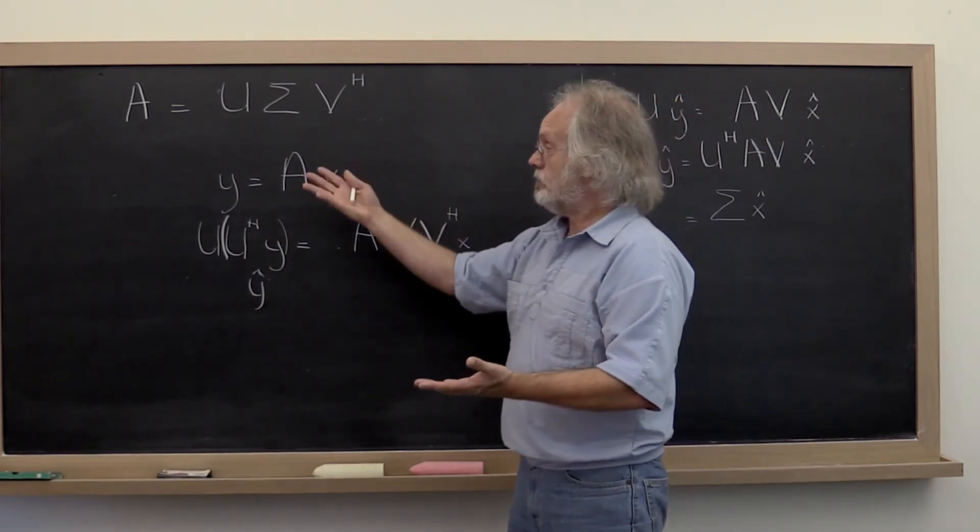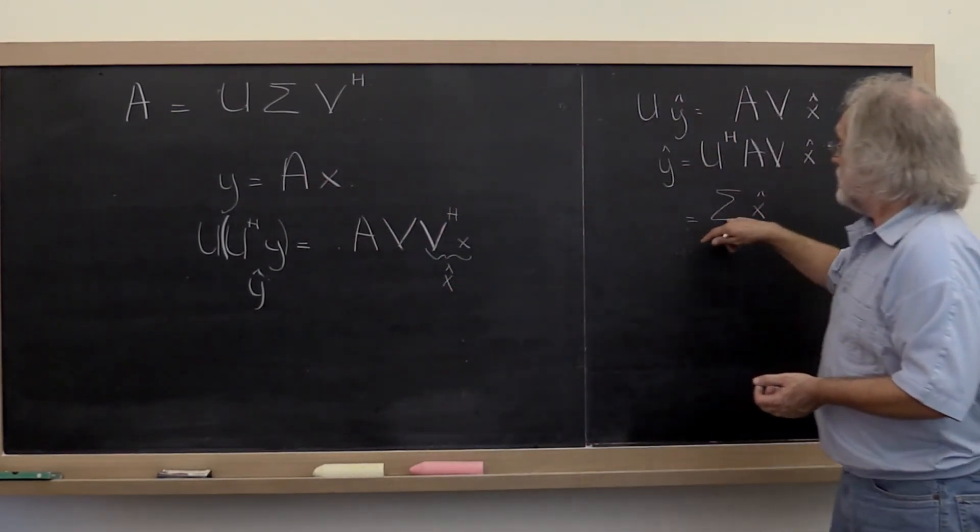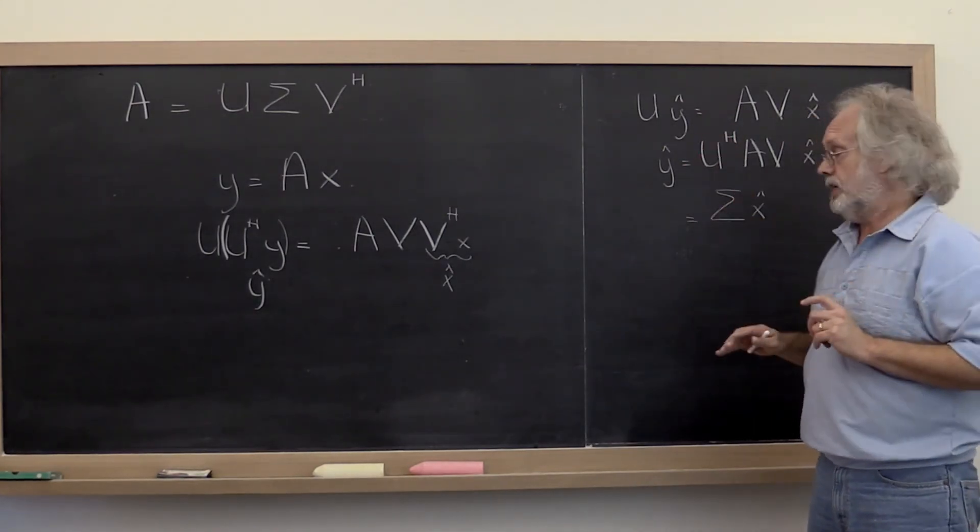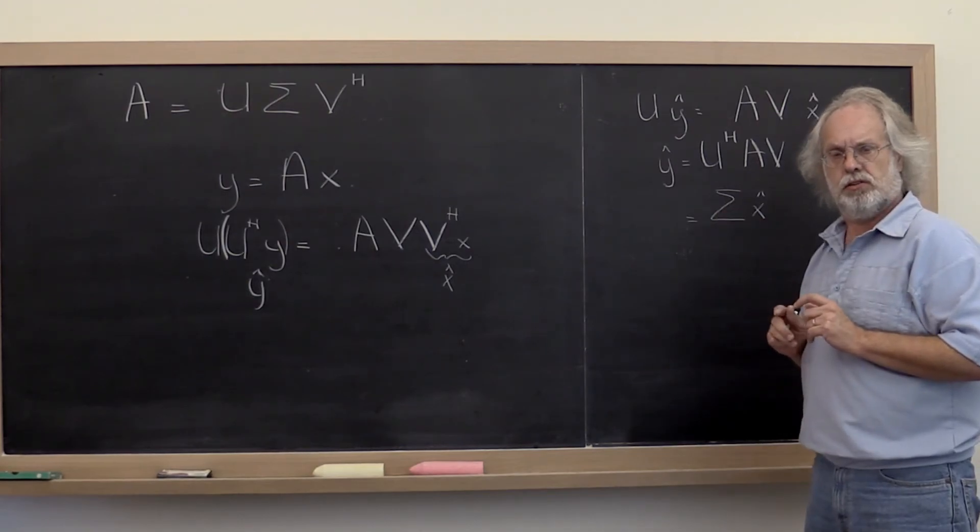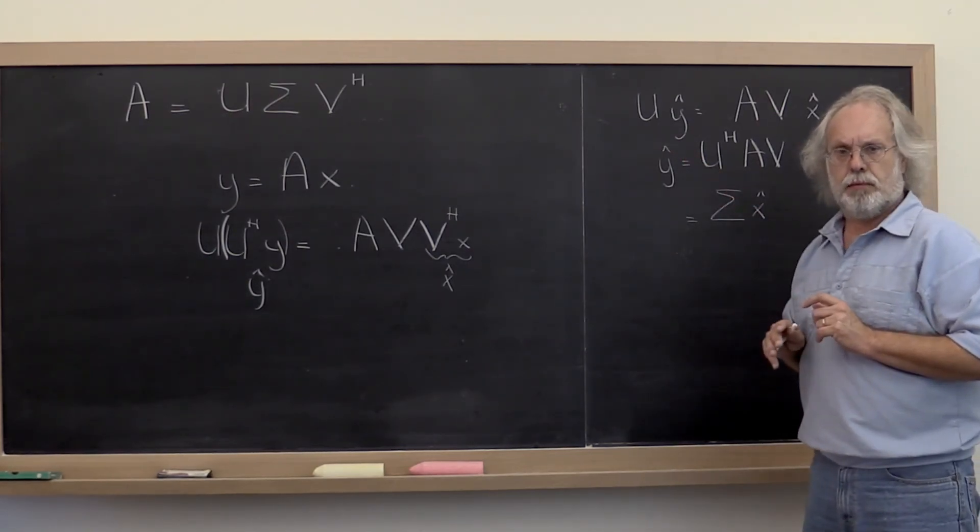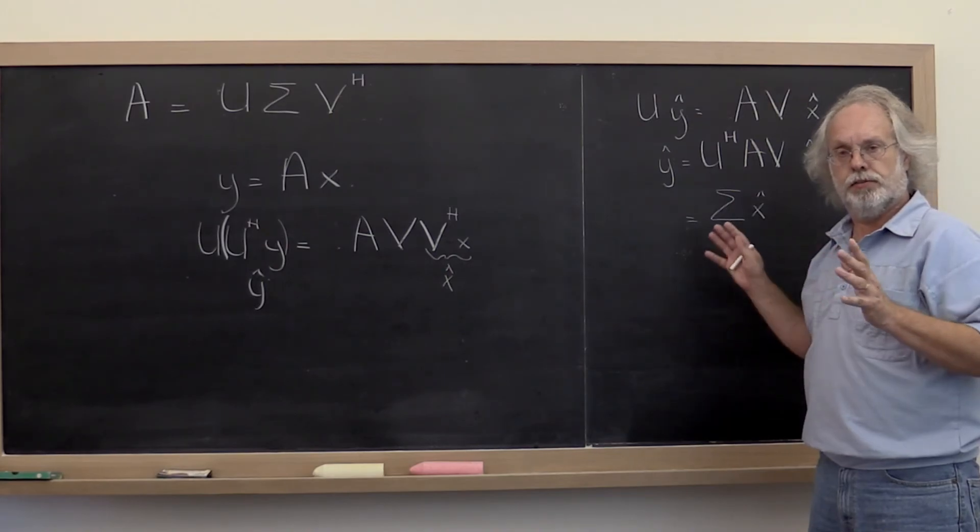then our matrix all of a sudden becomes a diagonal matrix. Well it might be rectangular, but you know what I mean. There are only non-zeros on the primary diagonal of the matrix.